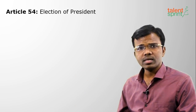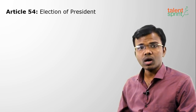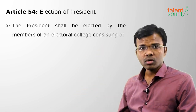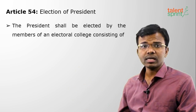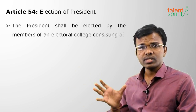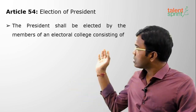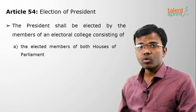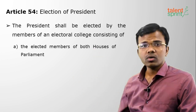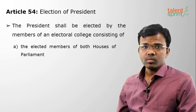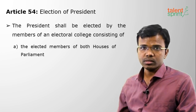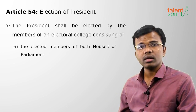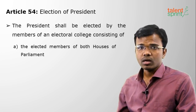Article 54 covers the Election of President. The President is indirectly elected by an electoral college separately constituted, which consists of the elected members of both houses of Parliament — Lok Sabha and Rajya Sabha — only elected members, not nominated members, whether directly or indirectly elected.